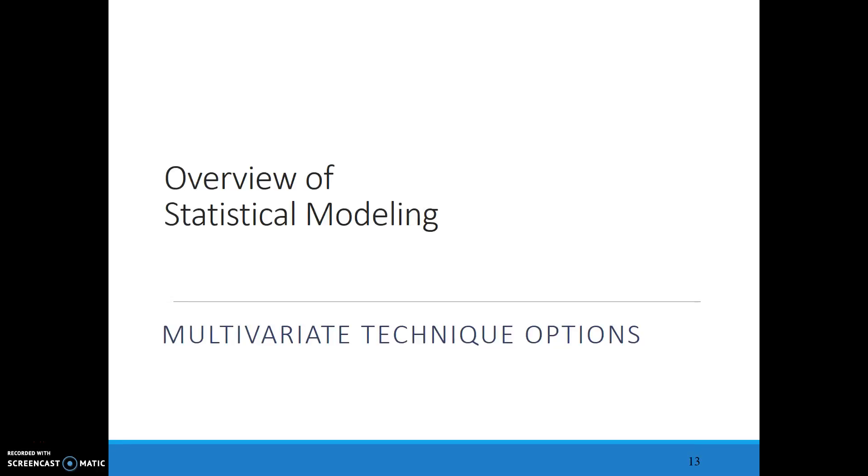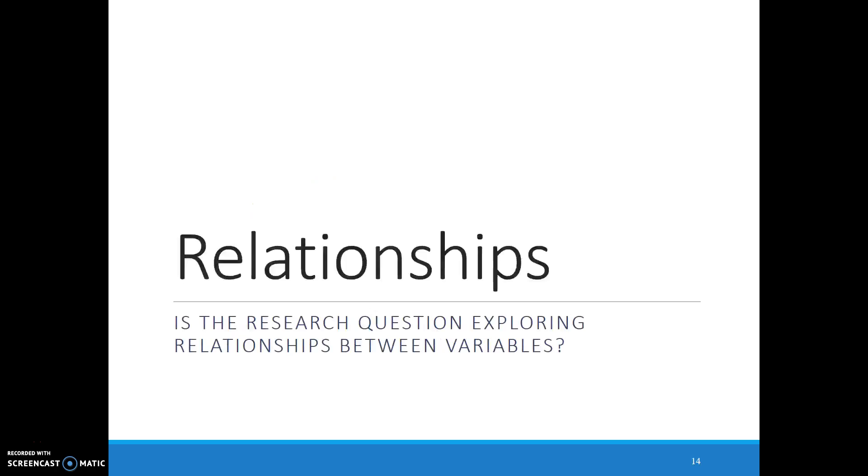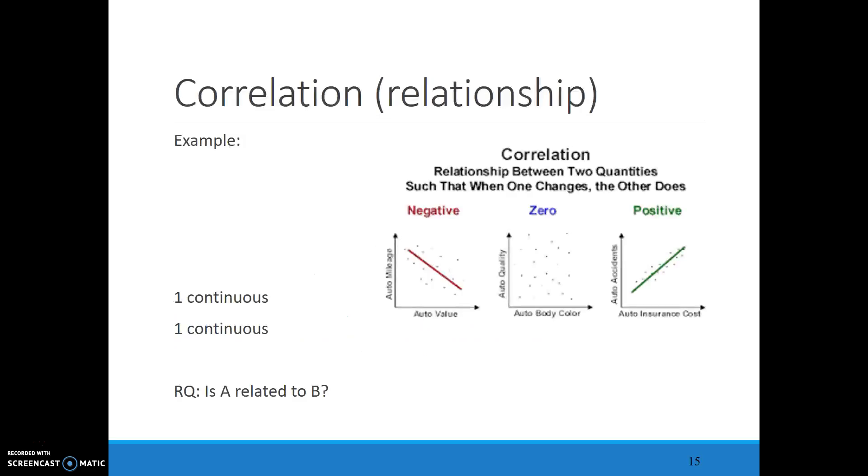This video is going to look at an overview of stats modeling that are relationship-focused. So somewhere in your research question should be the word relationship, or connection, or correlation. How are things connected? And this is very different than the idea of difference testing.